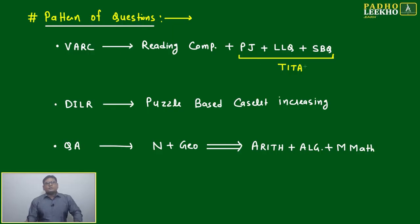The pattern of questions is almost fixed from the last four to five years. In VARC, they are asking only RC questions and TITA-based questions from para jumbles, last line questions, and some summary-based questions. In recent years, they have not touched all three sections. They will pick PJ or LLQ or SBQ, but PJ is compulsory. The only problem is all questions other than RC are TITA-based.